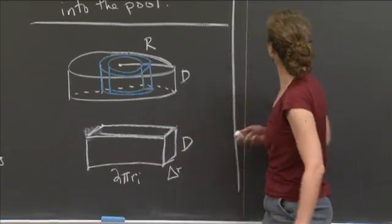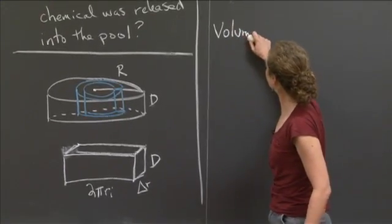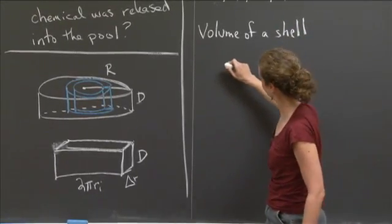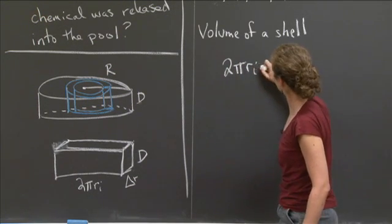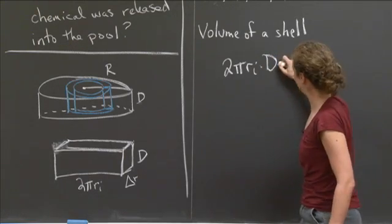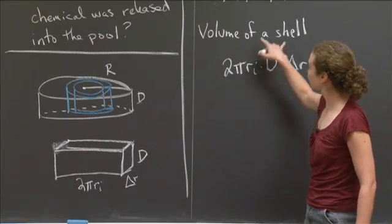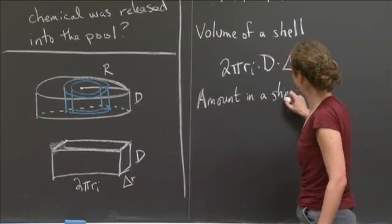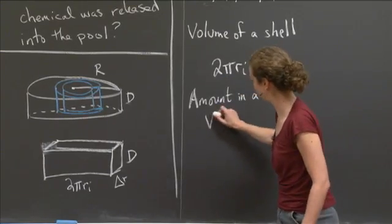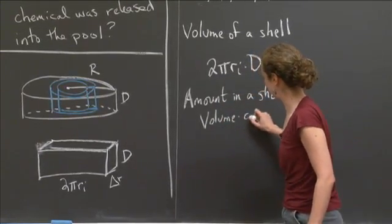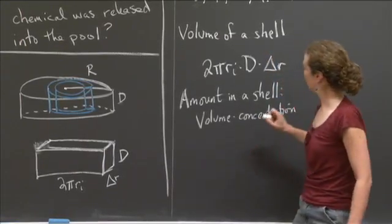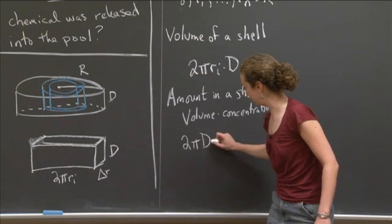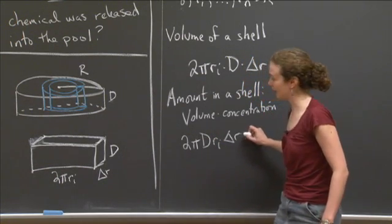So the volume of each shell, let me come over here. The volume of each shell is something like 2 pi r sub i times D times delta r. And so then the amount of chemical in the shell is going to be the volume times the concentration, right? The volume times the concentration. So the volume is, again, this. I'm going to put the D in front of the r sub i. 2 pi D r sub i delta r times the concentration,